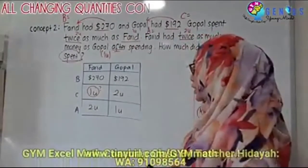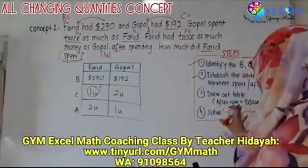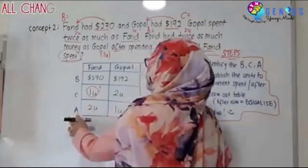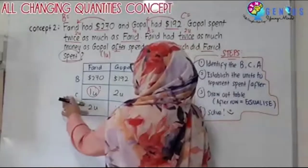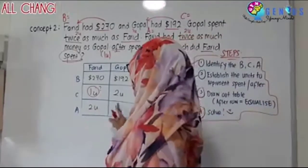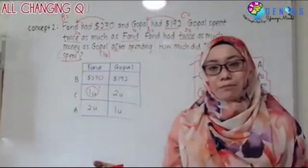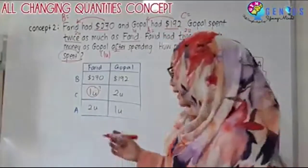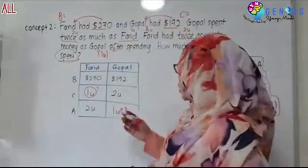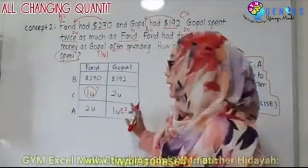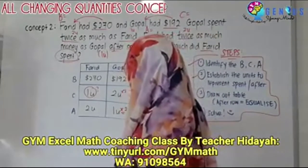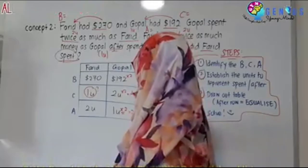The next step for all-changing quantity is to establish a row to equalize it. The units are in the change and the after. I can't equalize the change because that's what I want to find, so I equalize the after row. I have two units for Farid and one unit for Gopal — they are not the same. We can make them the same: multiply that one unit by two. Whatever we do to a box in the column, we do the same to all boxes in that column. So here becomes two units, here becomes four units, and here becomes $384.